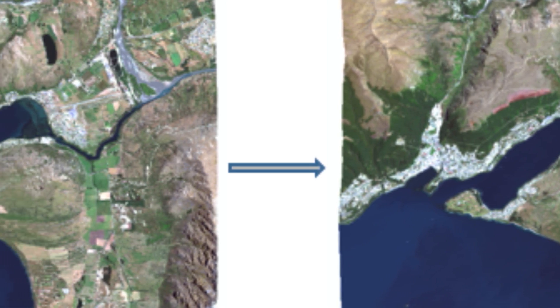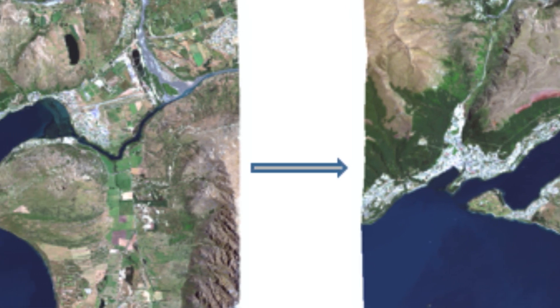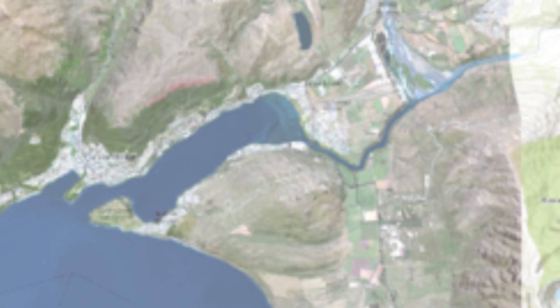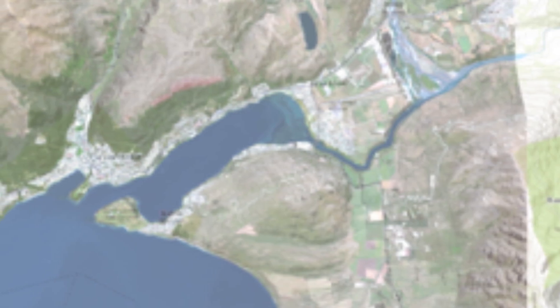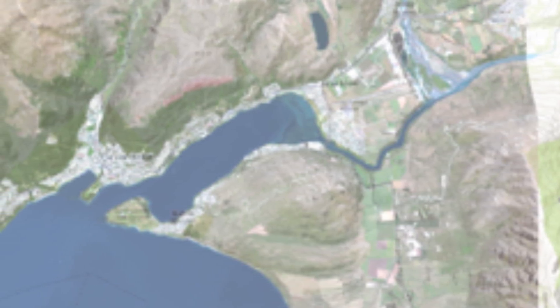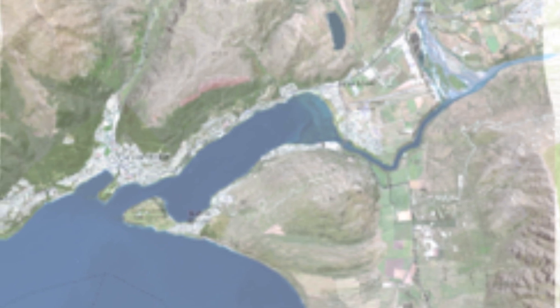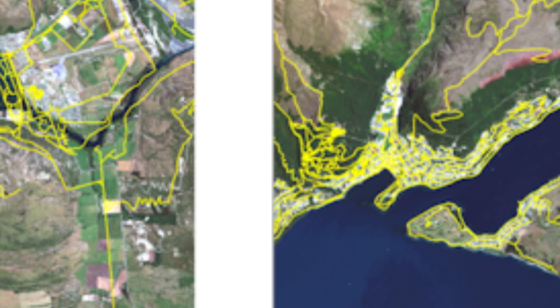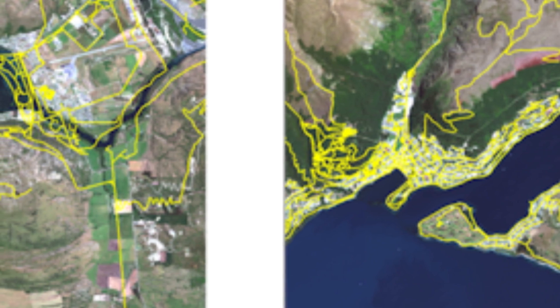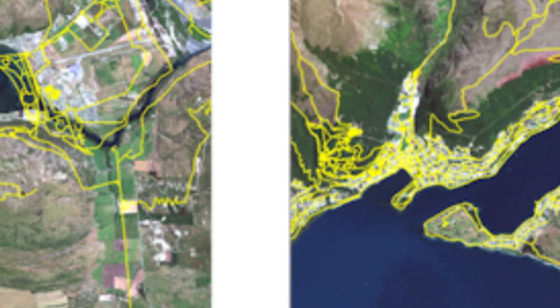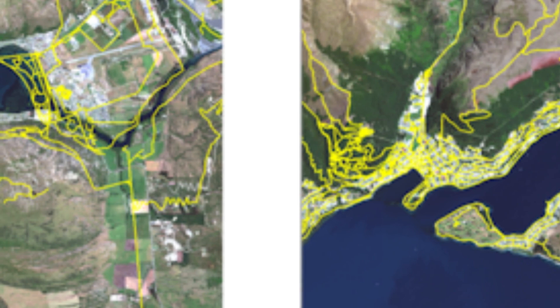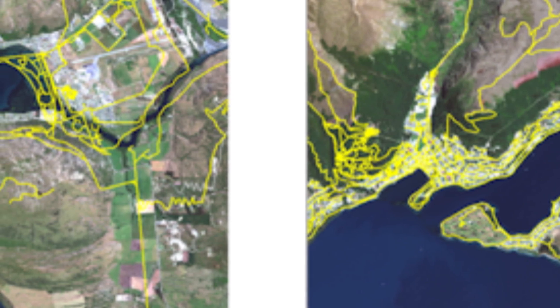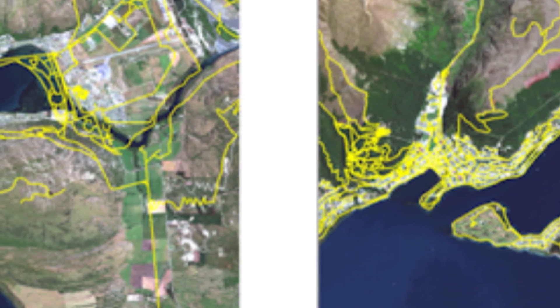Satellite images can contain a number of artifacts and anomalies, which must be corrected before they can be transferred to maps. Adjustments that are often applied to satellite images include geometric corrections. Geometric corrections are applied to an image to adjust spatial anomalies caused by variations in altitude, earth curvature, relief displacement, and so on.